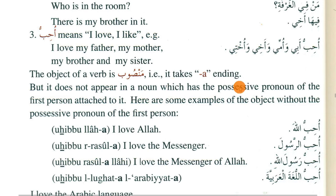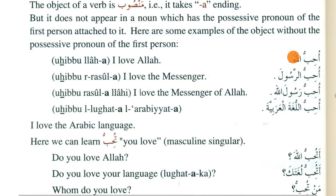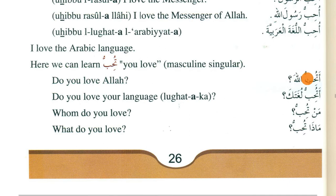The maf'ul bihi of a verb is mansoob, so it takes a fatah ending. However, when we add a possessive pronoun to the maf'ul bihi, it does not take a fatah ending. So 'ab', 'um', 'akht' are all maf'ul bihi but without fatah because they carry the possessive pronoun 'ya'. When there is no possessive pronoun, the maf'ul bihi of ohibbu takes fatah - for example: 'ohibbu Allah', 'rasool', 'lugha' - all have fatah.